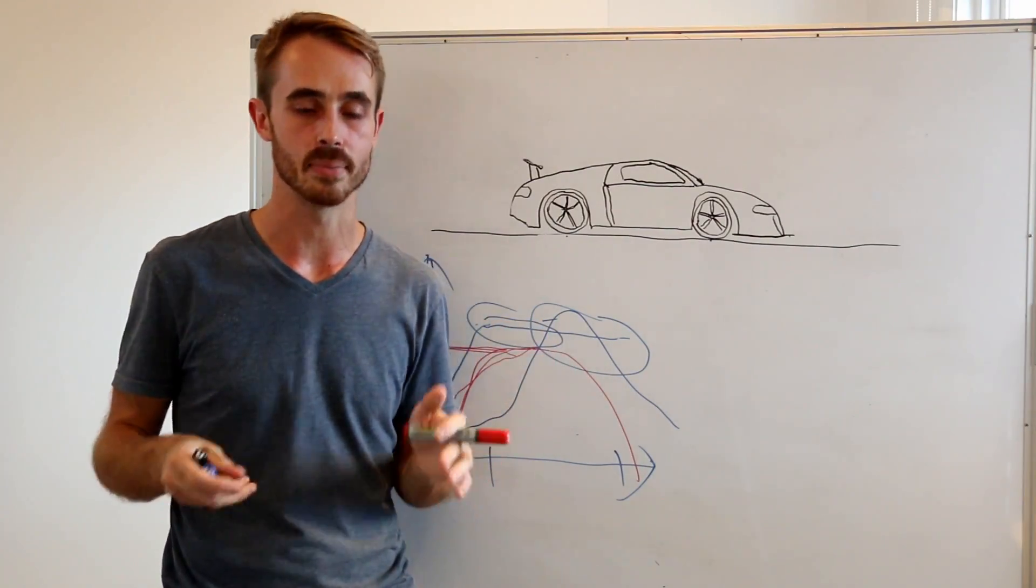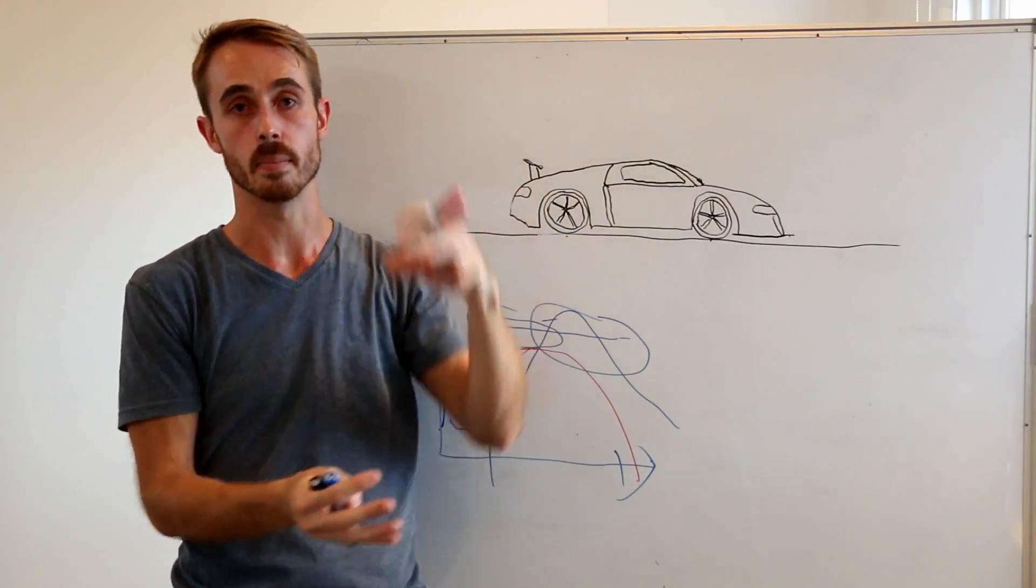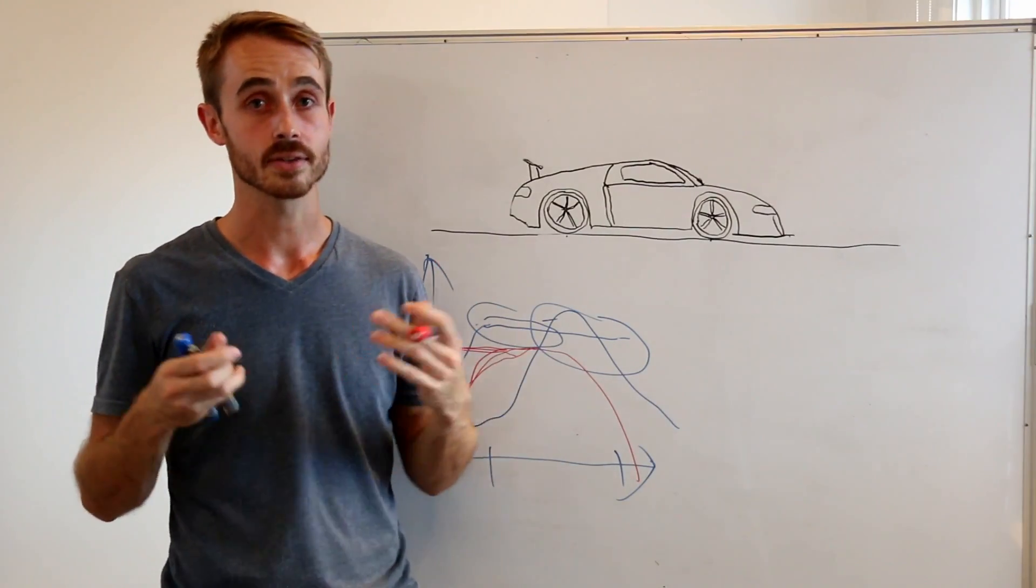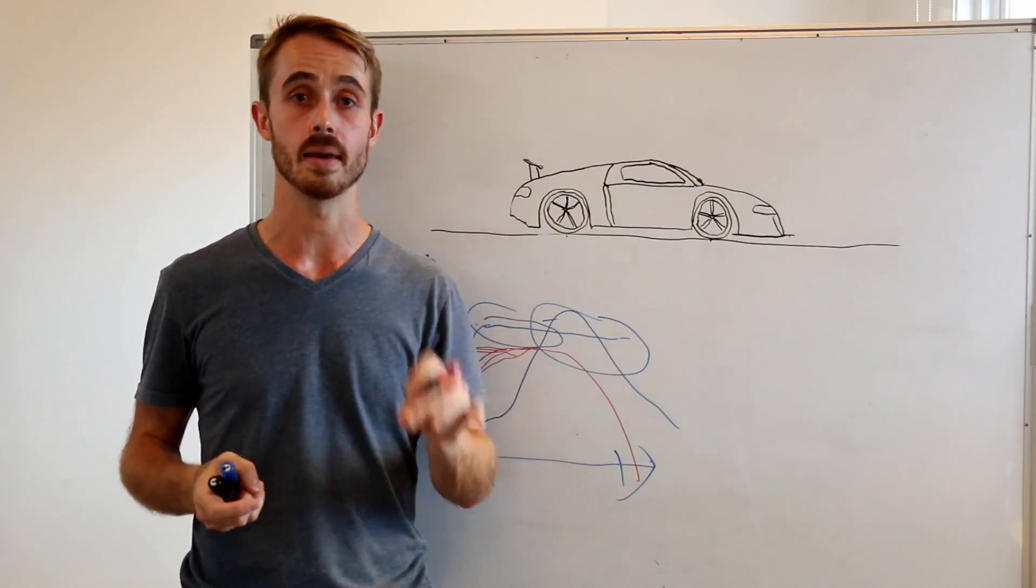So the only real option for a hybrid system is for them to be right at the front differential. Problem with this is, this will now raise your front bonnet height, cause problems aerodynamically. If you're doing that, it's going to be a real issue for a vehicle that's designed to have a really high top speed where aerodynamics really matter.